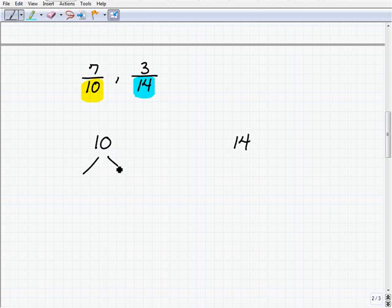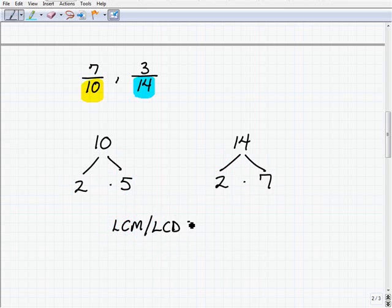Go ahead and take a moment and find the LCM. We have to first prime factor these two, so go ahead and do that. Alright, so 10 prime factors as 2 times 5, and 14 prime factors as 2 times 7. Our LCM or LCD in this case, because we're talking about the denominators, same thing.